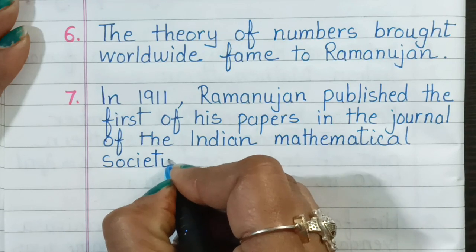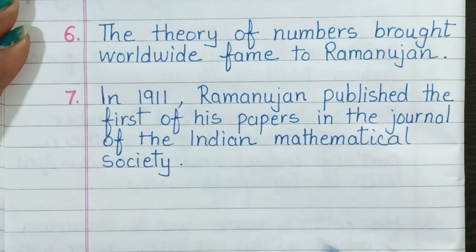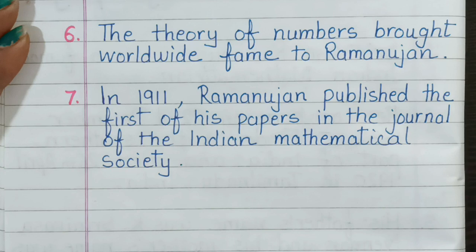Number 7. In 1911, Ramanujan published the first of his papers in the Journal of the Indian Mathematical Society.